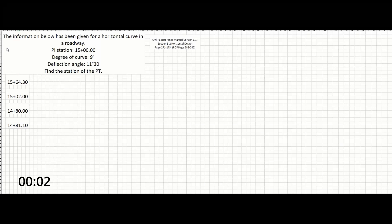Okay guys, in this problem, the information below has been given for a horizontal curve in a roadway. We have the point of intersection, or the PI station, at 15 plus 0.0 station. We have the degree of curve at 9 degrees, the deflection angle at 11 degrees and 30 minutes, and the station of the point of tangent, or the PT, is what we are looking to find.